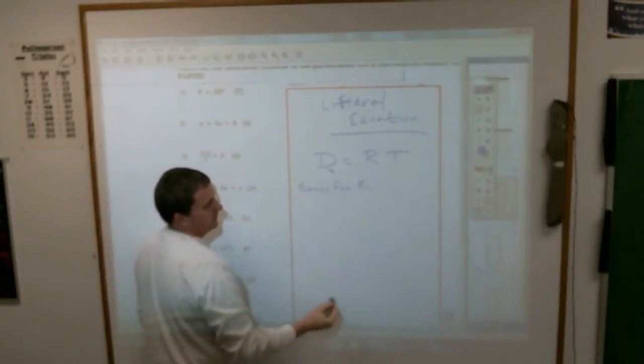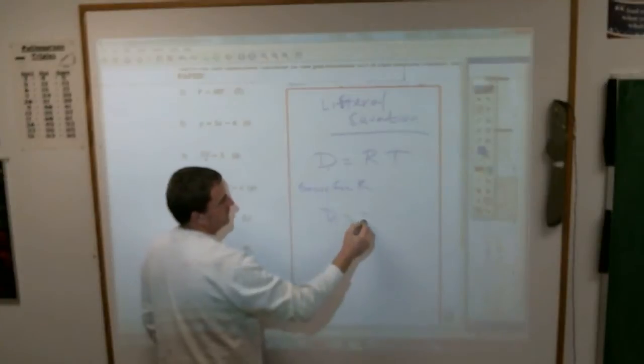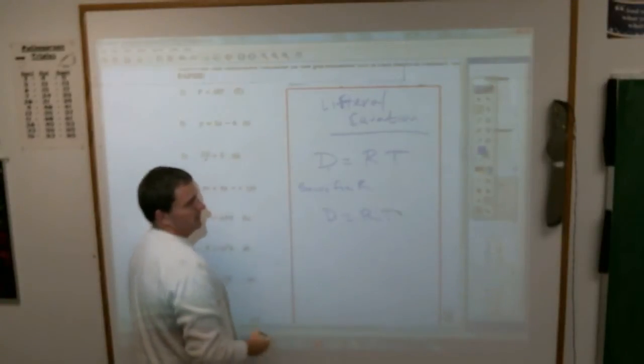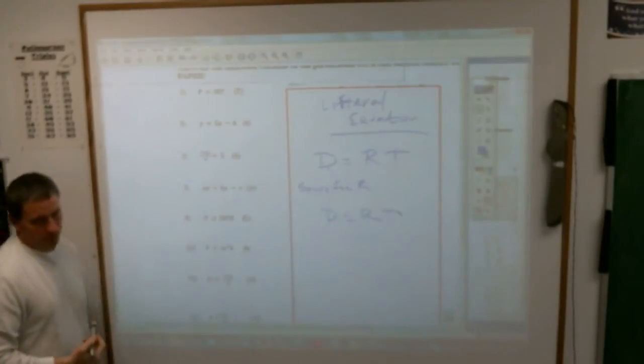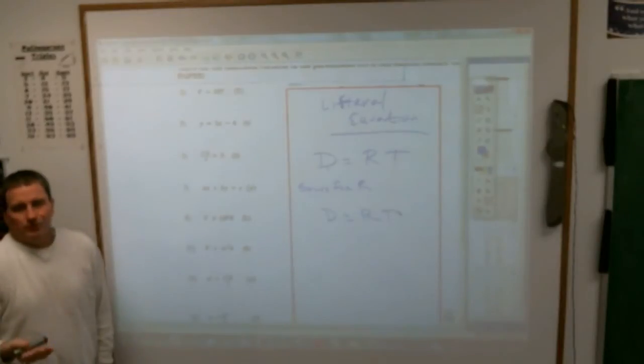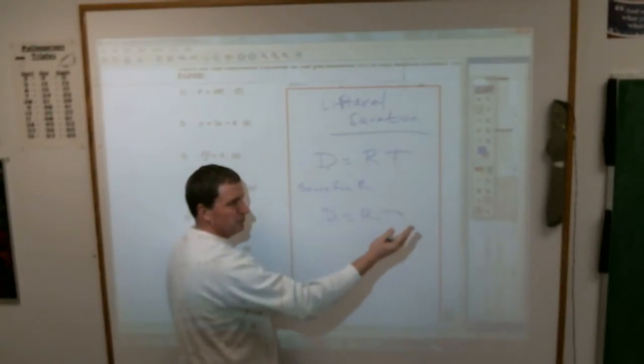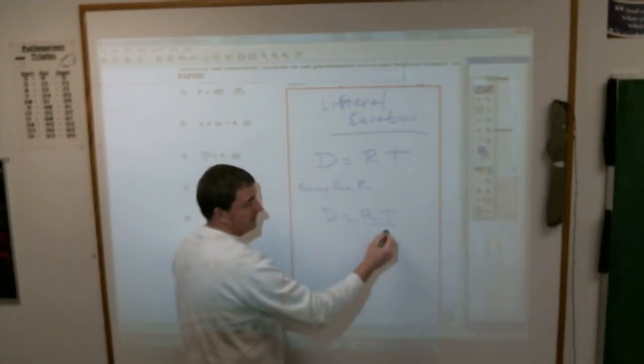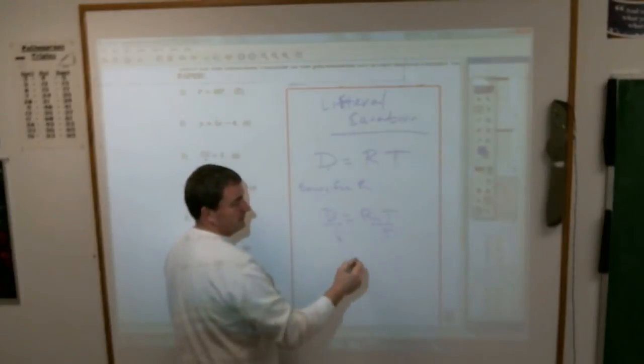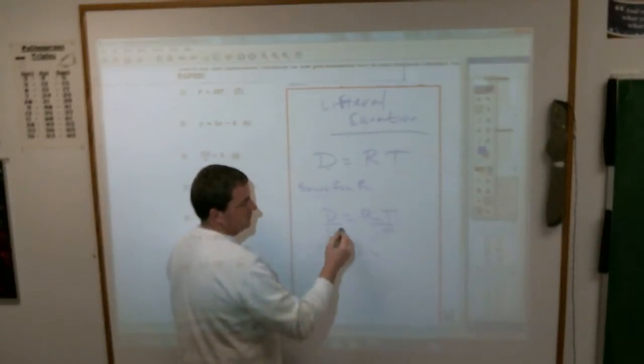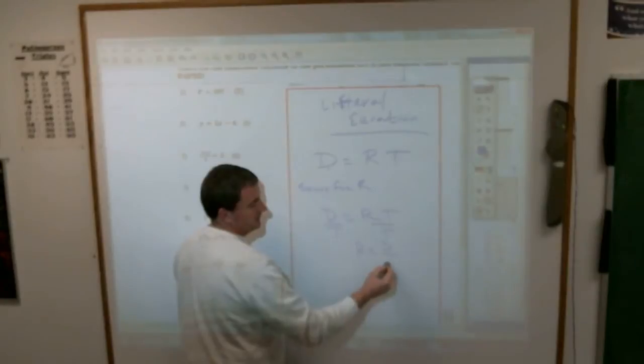Solve this equation for the letter R. If distance equals rate times time, then how would you solve for what rate equals? You just have to remember the fundamental rules of equations. How do I get the letter R by itself? This is multiplication, so you do the opposite. You divide by T and divide this by T. Rate has to equal distance divided by time.